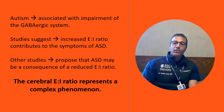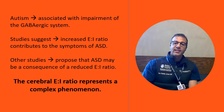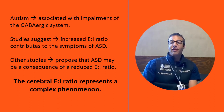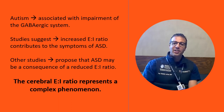However, some studies indicate that increased excitation-inhibition ratio leads to autism, and other studies suggest the opposite — that decreased excitation-inhibition ratio leads to autism.